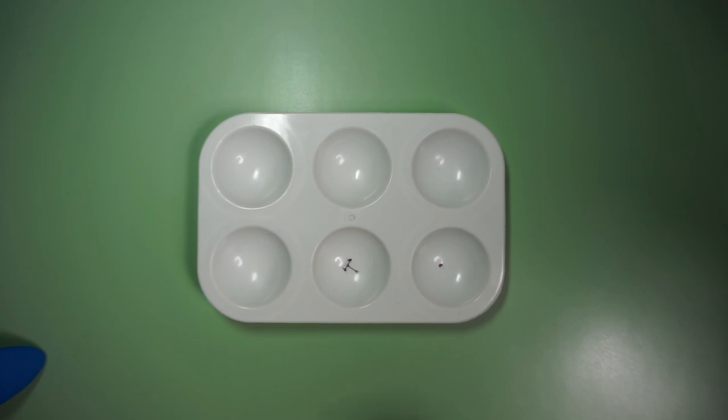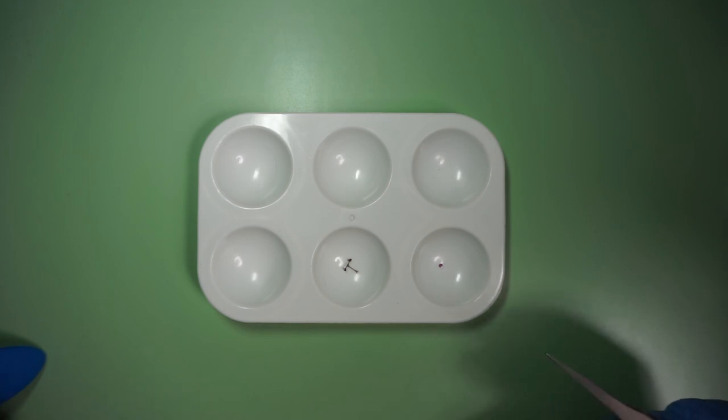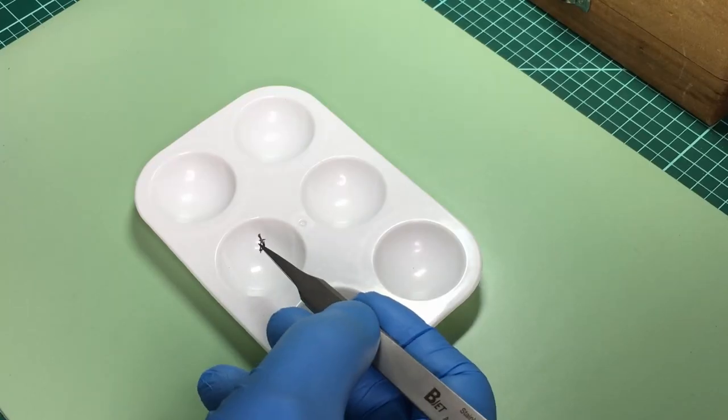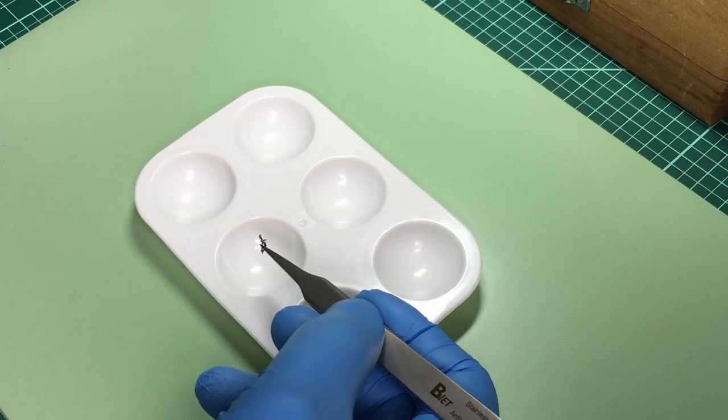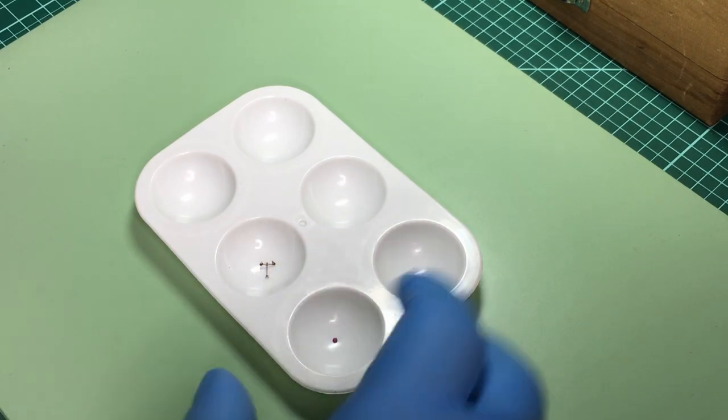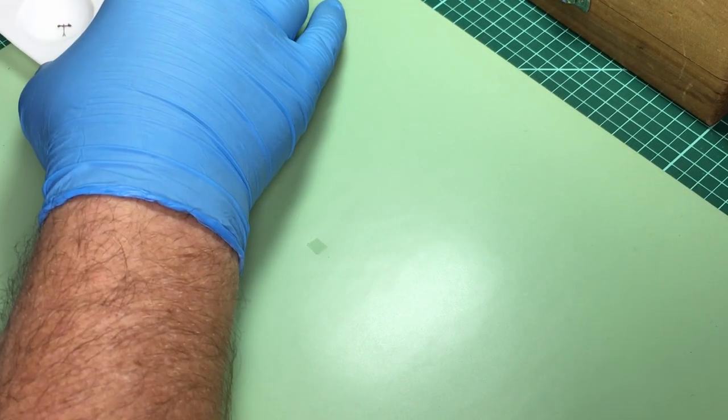Now, you might be asking what kind of a tool is precise enough to be able to measure these little jewels and these little pivots on the pallet forks.